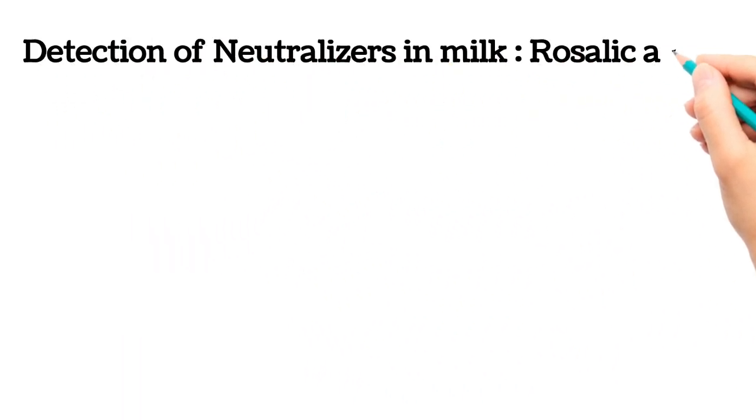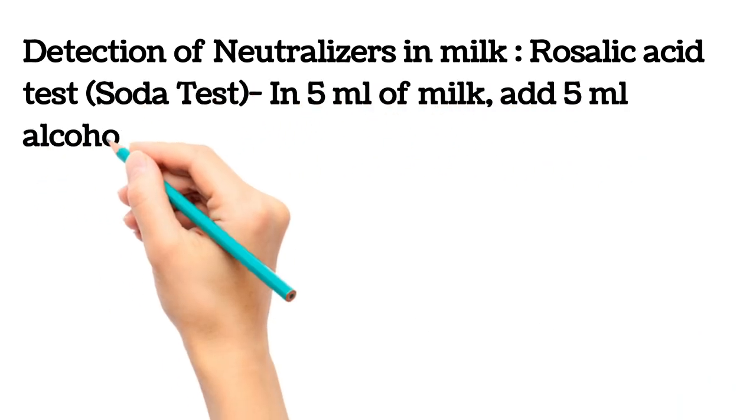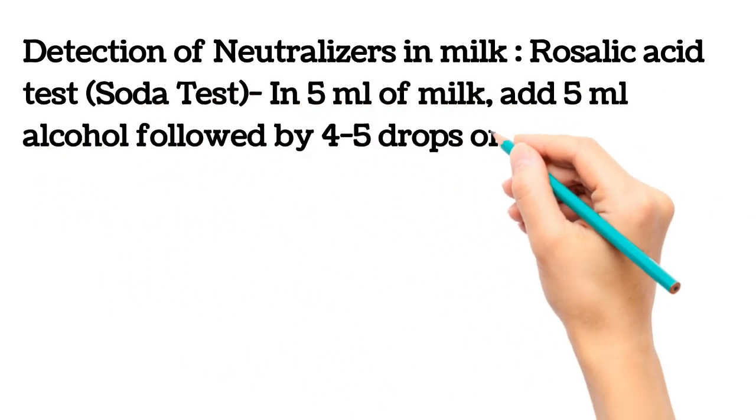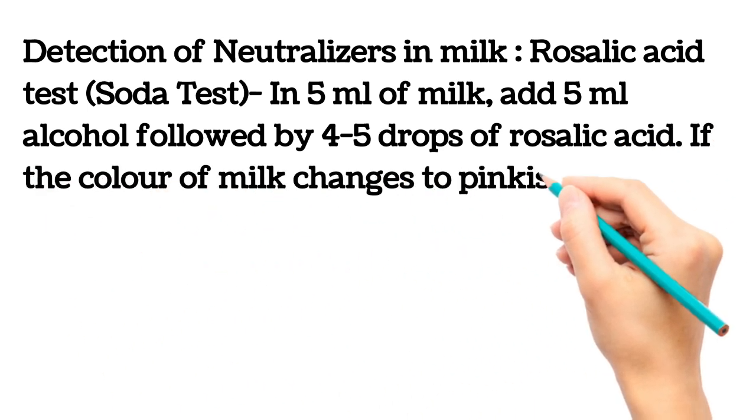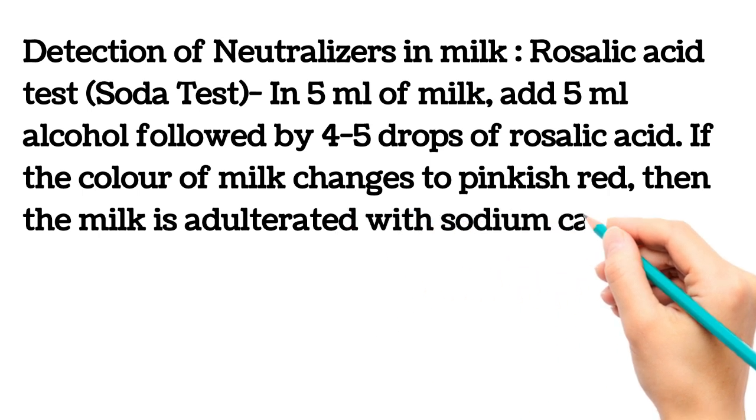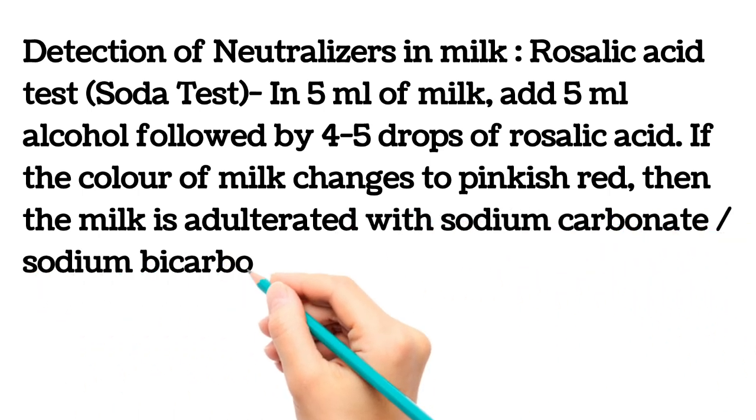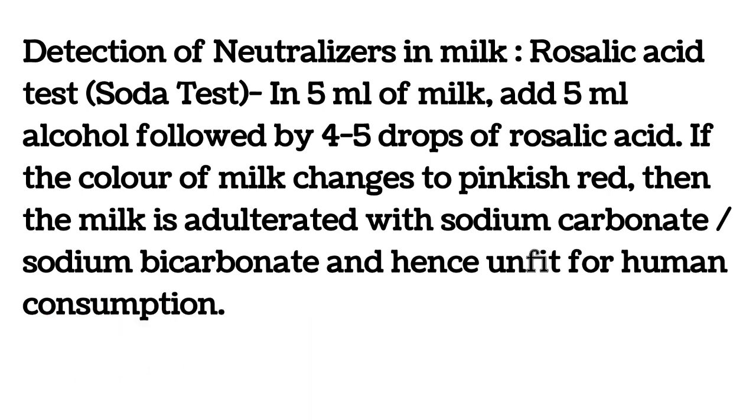Next, detection of neutralizers in milk. Rosalic acid test or soda test. In 5 ml of milk, add 5 ml alcohol followed by 4 to 5 drops of rosalic acid. If the color of milk changes to pinkish red, then the milk is adulterated with sodium carbonate or sodium bicarbonate and hence unfit for human consumption.